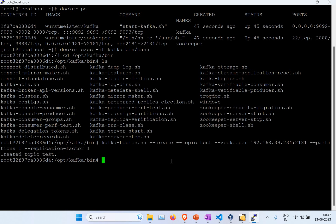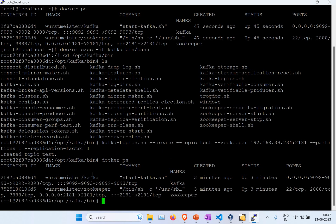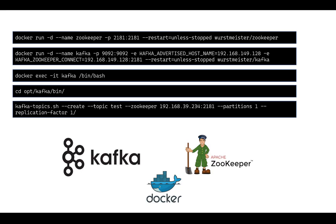Running 'docker ps' you can see both containers — Kafka and Zookeeper — are running. You can simply create your containers using the docker-compose file and start working with Kafka. If you don't want to use docker-compose, you can manually run the commands I showed in my previous tutorial. However, I would suggest using docker-compose — it's a simple file you can put on GitHub and run whenever you want.